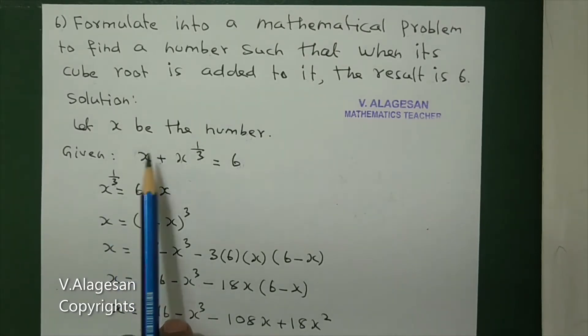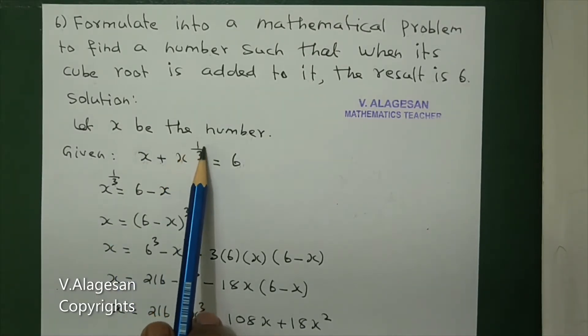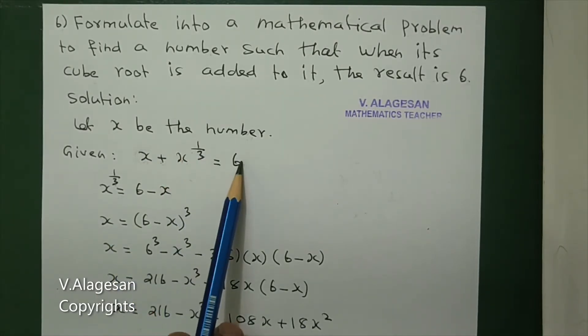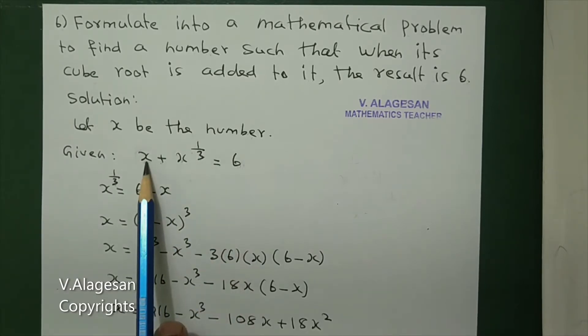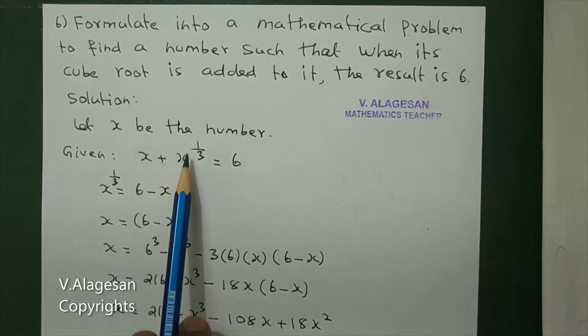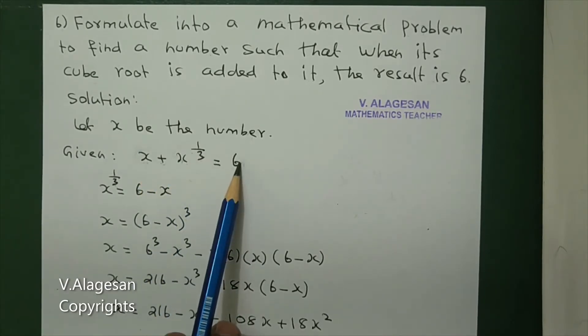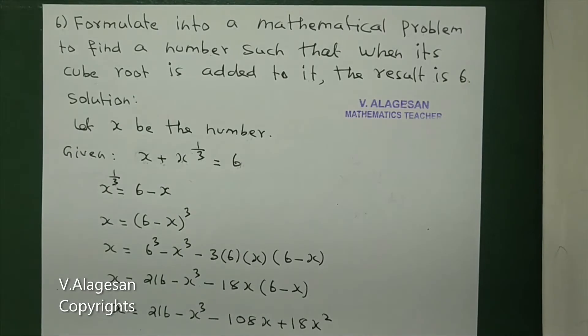So, one number and cube root added gives six. Therefore, x plus x to the power one-third is equal to six.